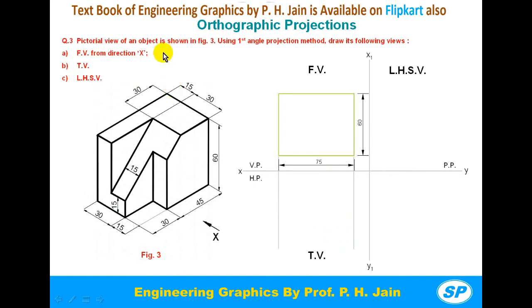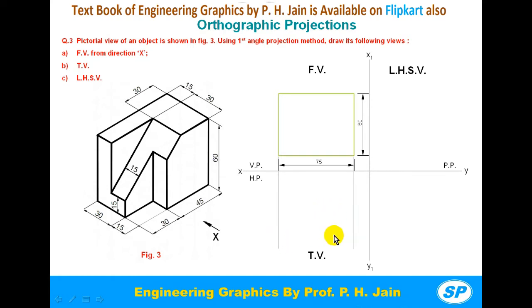Now look at the object from the top direction. The overall dimensions are 75 mm length and 30 + 15 = 45 mm width. So in the top view we construct a rectangular box of 75 mm length and 45 mm width, again choosing a convenient distance from the XY line. Then project each corner from the front view to the left hand side view and from the top view to the left hand side view.